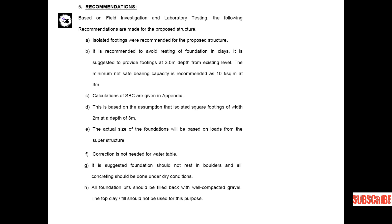3 meters depth from the existing ground level. The minimum net safe bearing capacity is recommended as 10 tonnes per square meter at 3 meters depth. Calculations of safe bearing capacity are given in the appendix. This is based on the assumption of an isolated square footing of width 2 meters at a depth of 3 meters. The actual size of the foundation will be based on loads of the superstructure. No corrections are needed for the water table.